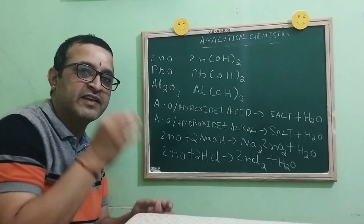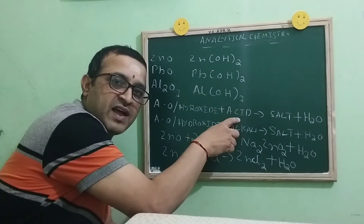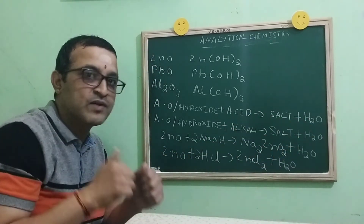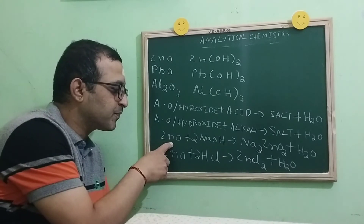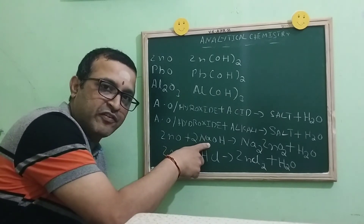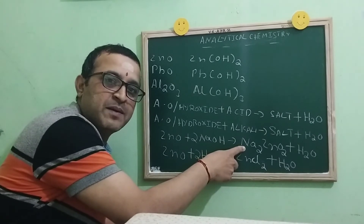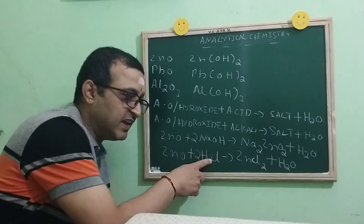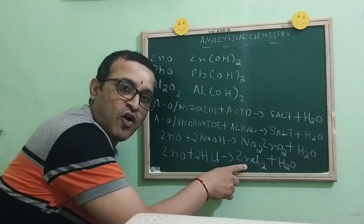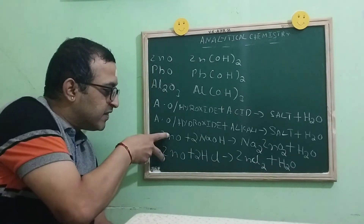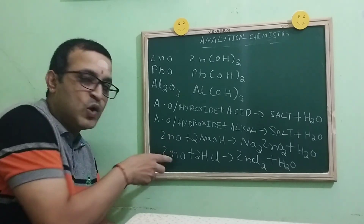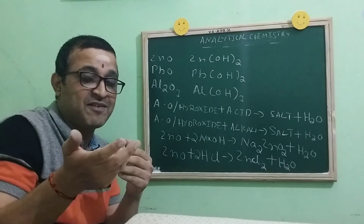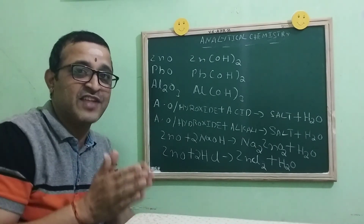These amphoteric oxides and hydroxides have the ability to react with both acid and alkali to produce salt and water. For example, ZnO reacts with NaOH base to produce sodium zincate and water. The same ZnO can react with acid HCl to produce ZnCl2 salt and water. This clearly indicates that ZnO is an amphoteric oxide. I hope you have understood. Thank you very much. Namaste.